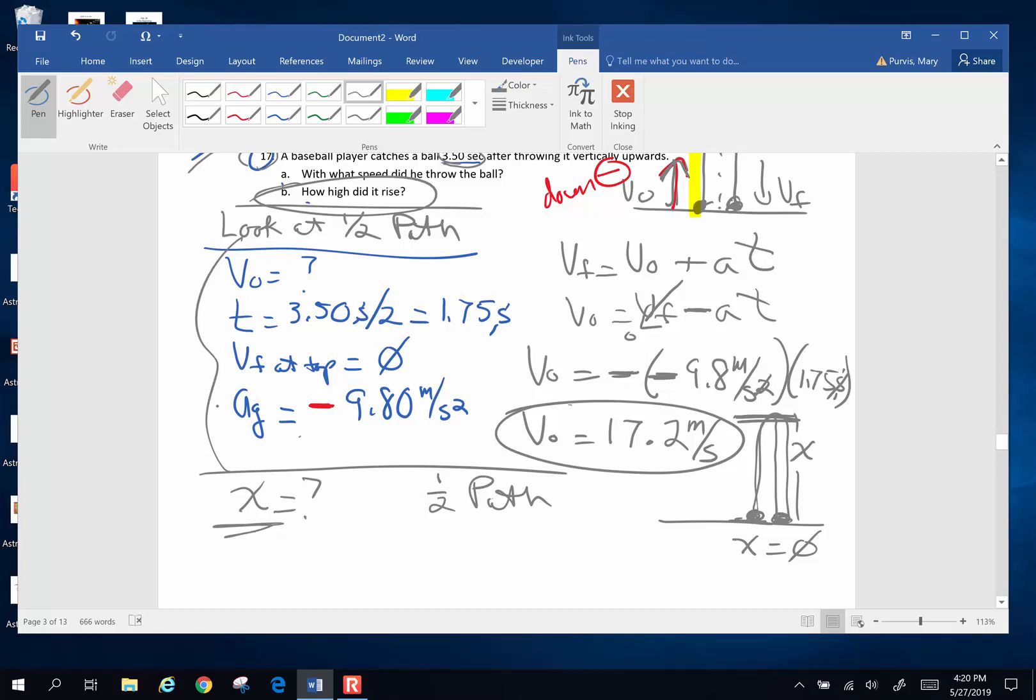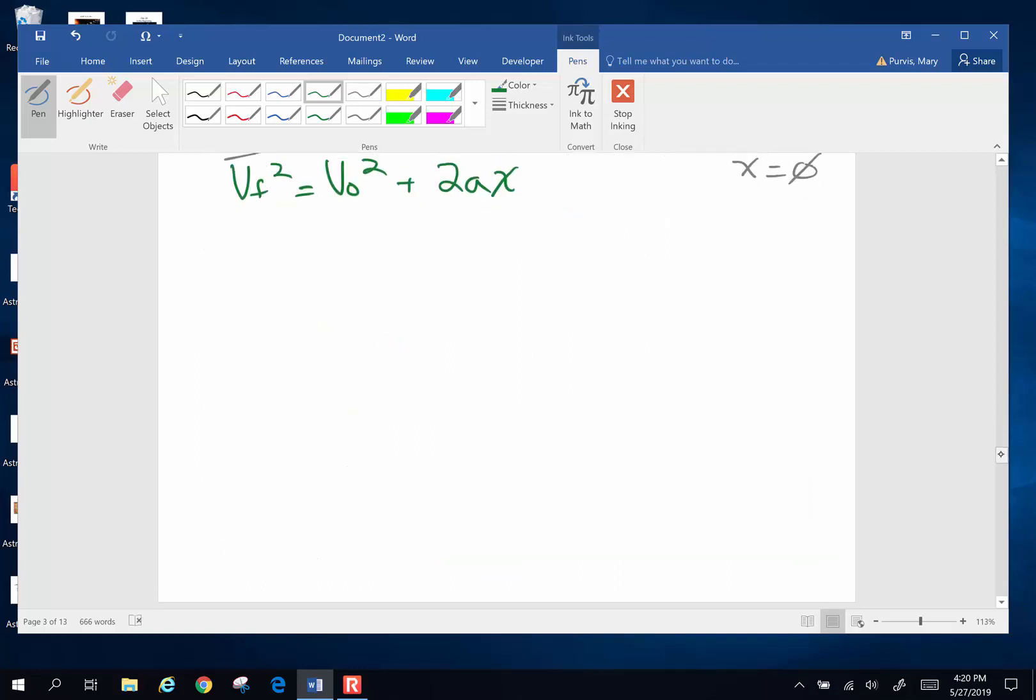Displacement is my question mark, I know my acceleration, I now know VO, I know my time, I know velocity at the top. What equation am I going to use? Anyways, I think I'm going to pick out lots of choices here. I think I'm going to pick out VF squared is VO squared plus 2AX. I'm going to solve for X when I do the algebra solving for X.